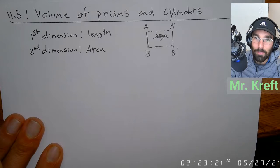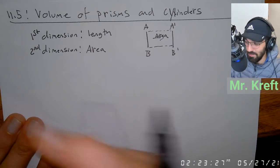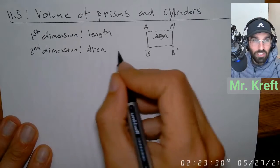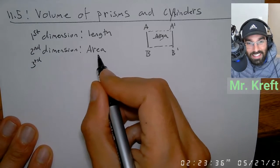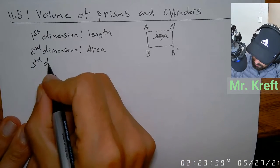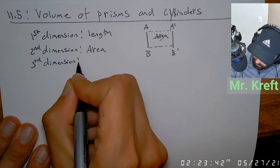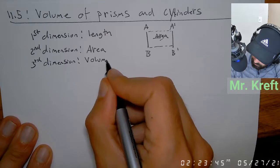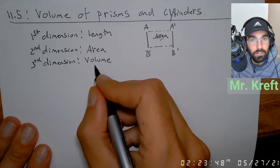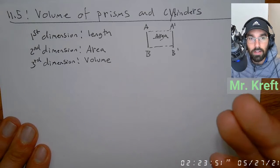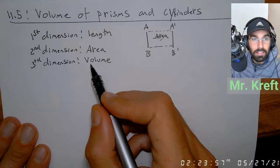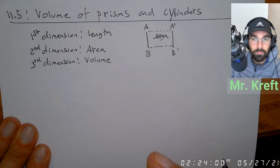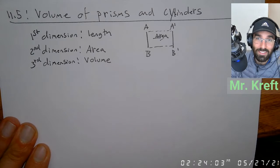The second dimension is area. If we take length and move it, we get area. So for the third dimension, we take area and move it, and what we get is volume. That's what calculus is — part of calculus is area in motion.